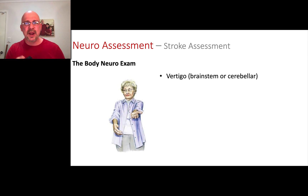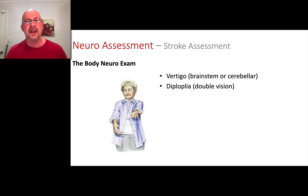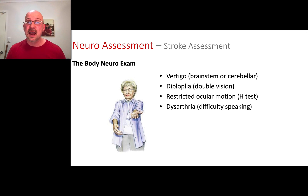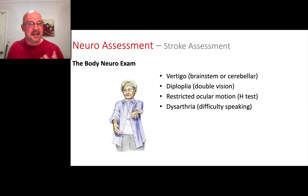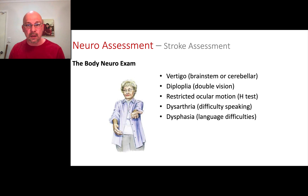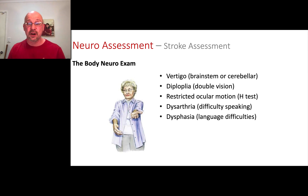We can also ask about the brain more broadly: we ask about vertigo, which we've spoken about already; we ask if their vision is okay, which we've done with the cranial nerves; we do the H test, already done; and we ask if they're having any difficulty speaking. Dysarthria is difficulty in actually producing the words — if they're having trouble speaking, that's dysarthria.